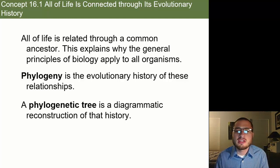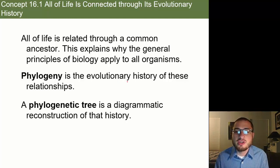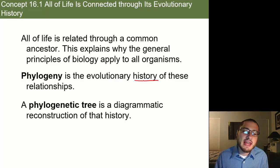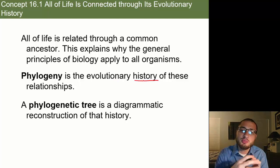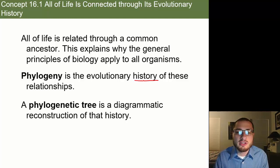Those organs formed organ systems, and the organ systems form organisms — very complex, multicellular, multi-tissue, multi-organ, multi-organ system individuals. So phylogeny is the evolutionary history of these relationships, looking at how things started very simple and branched off into different, more complex organisms.